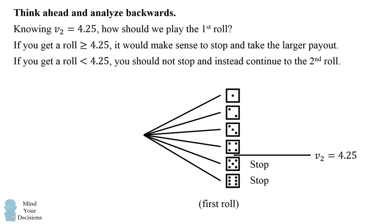Furthermore, if we get a roll that's smaller than the average payout of 4.25, you should not stop and instead continue to the second roll where you could get that average payout of 4.25. So if you roll a 1, 2, 3, or 4, you would want to roll again.